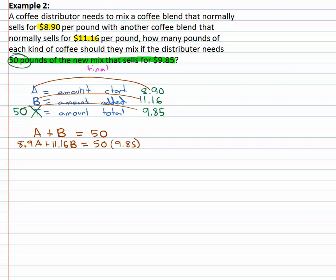We now have something we're ready to solve. Well, first equation, multiply by negative eight point nine. It will clear out the A's.